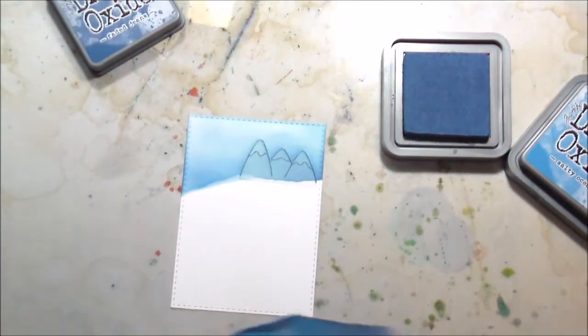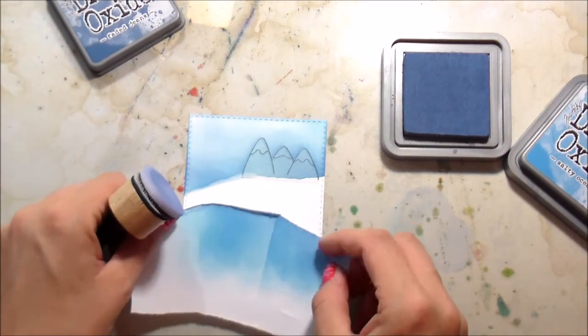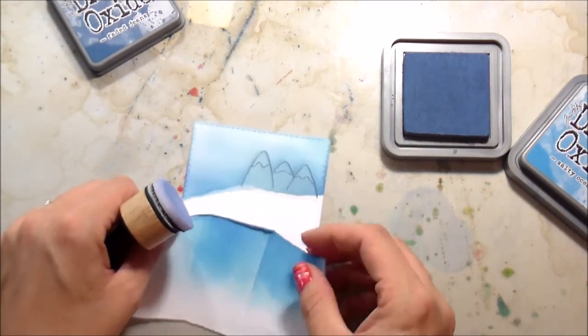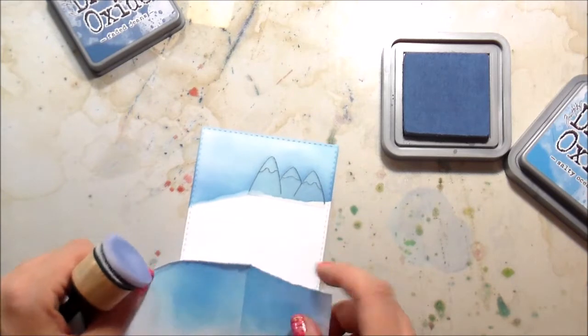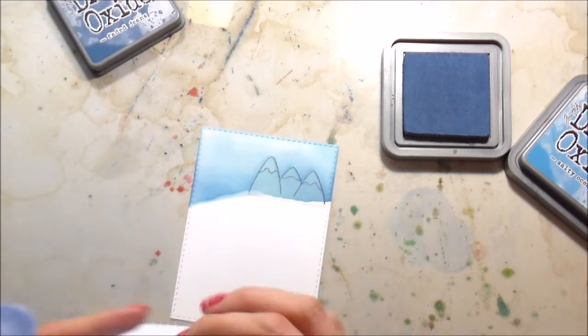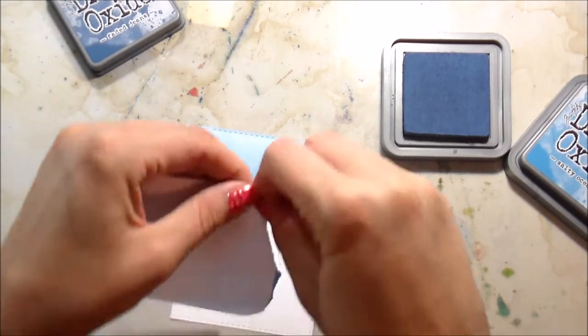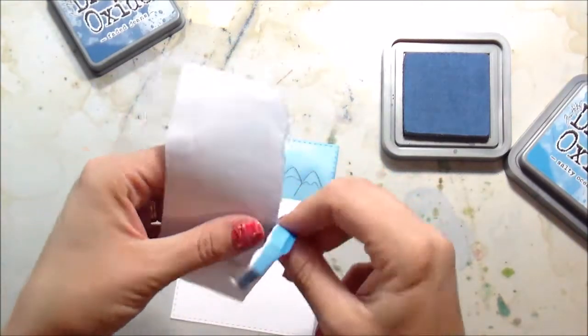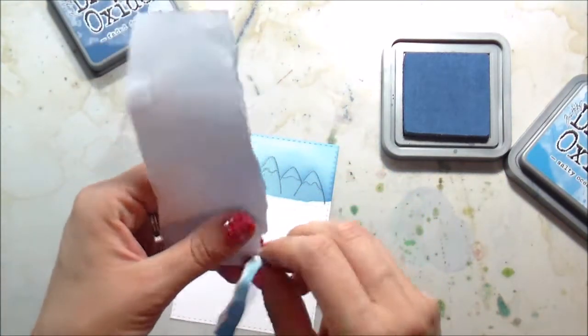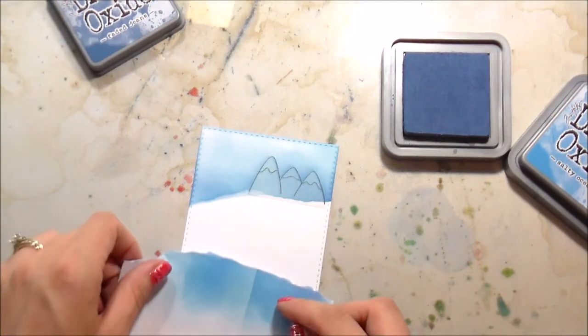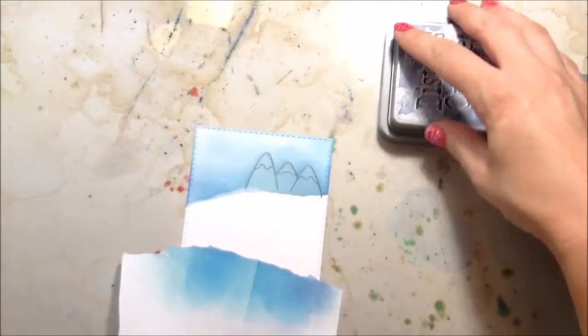I put down a light layer of salty ocean distress ink and then more toward the bottom edge I used faded jeans. I'm going to use the same mask. It was kind of rolling up on the edge, but I'm just going to tear off the old edge and use this as a new hill. See how resourceful we are.